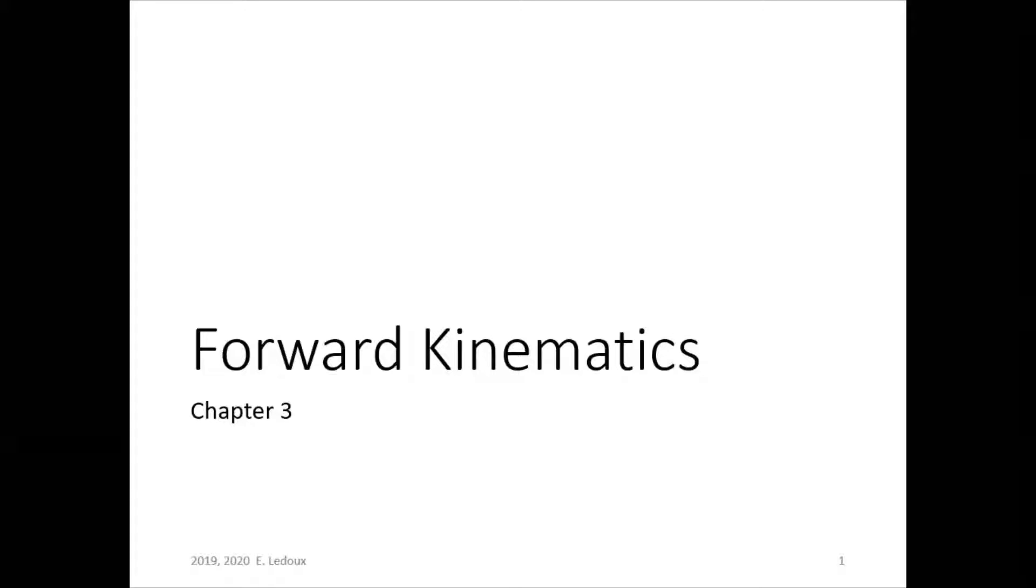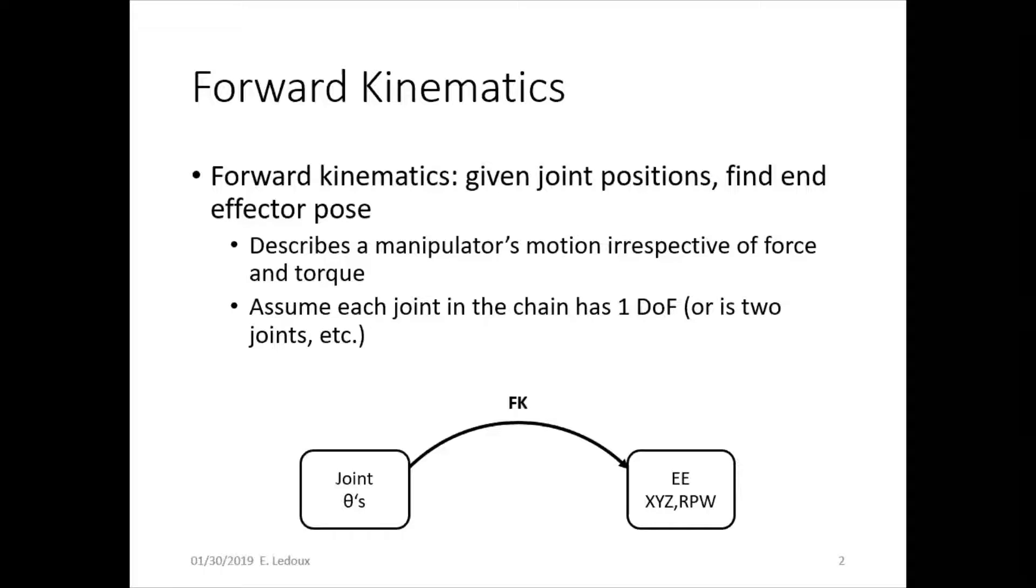Forward kinematics is a way to get from the base of the robot to the tip. So if you know all of the joint angles, how can you find the position of the robot's claw? Given the joint positions, find the end effector pose.